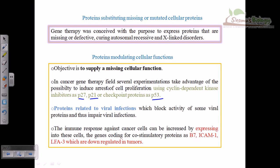On the other hand, supplying proteins related to viral infections can block the activity of some viral diseases. We can also excite the host body's immune system by supplying proteins like B7, ICAM-1, and LF-HC, which are downregulated in tumors.